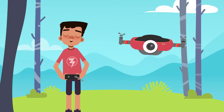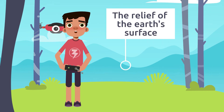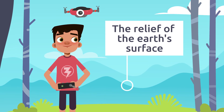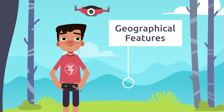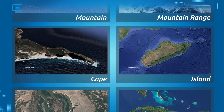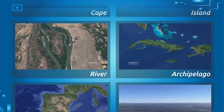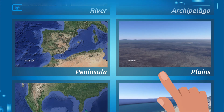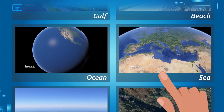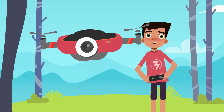This has been a sensational journey! We've learned that the relief of the Earth's surface refers to the elevation changes in the landscape, and that these elevation changes or landforms are called geographical features. Mountains, mountain ranges, capes, islands, and rivers all make up the Earth's relief. I've taken thousands of pictures and discovered some of the secret marvels of the Earth. See you soon, friends!